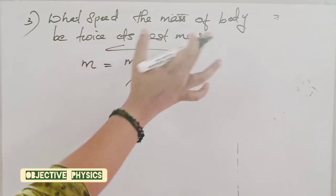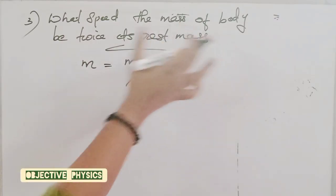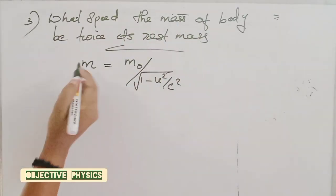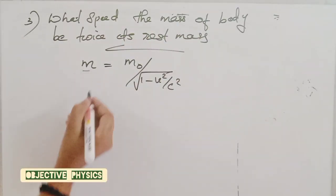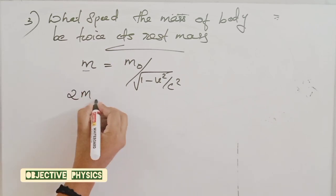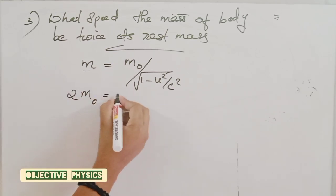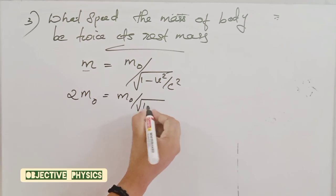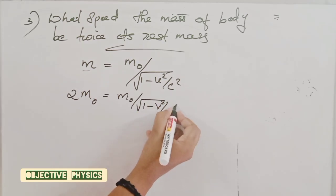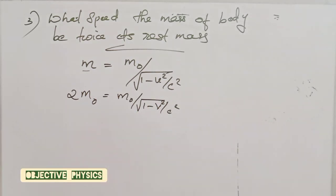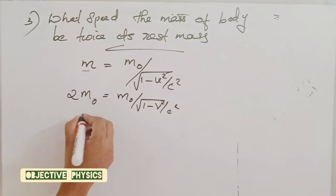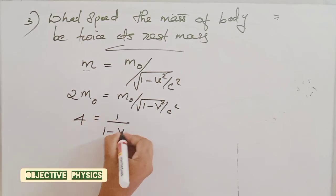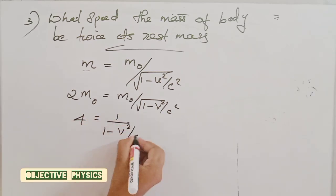At what speed will the mass of a body be twice its rest mass? That is, mass m equals 2m₀. So 2m₀ is equal to m₀ divided by the square root of 1 minus v² by c².